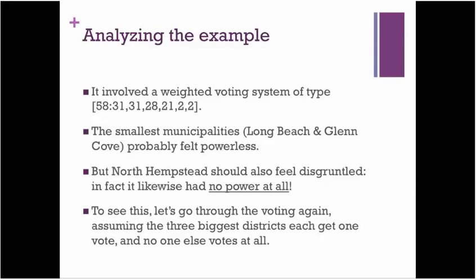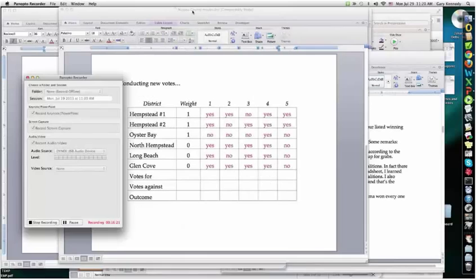Now to convince you of this, what I want to do is I want to go through the voting again. Assuming this time that the three biggest districts each get a single vote, and no one else votes at all. So I'm going to do a very much more simplified situation. The three biggest districts, Hempstead number one, Hempstead number two, and Oyster Bay, will each get a vote. And the rest, it's as if they're not voting at all because their weight is zero.